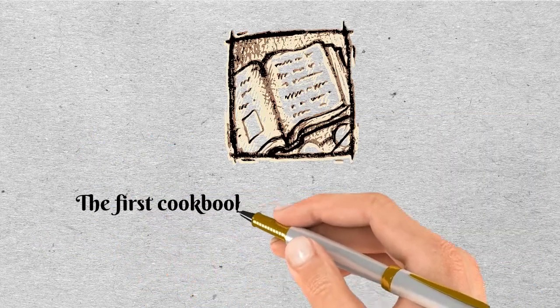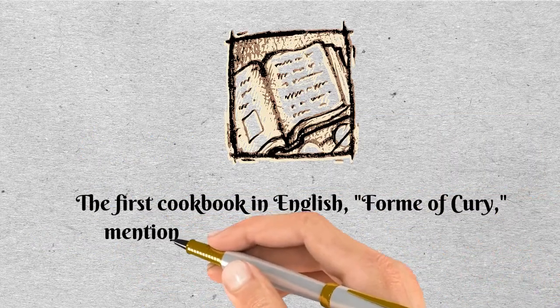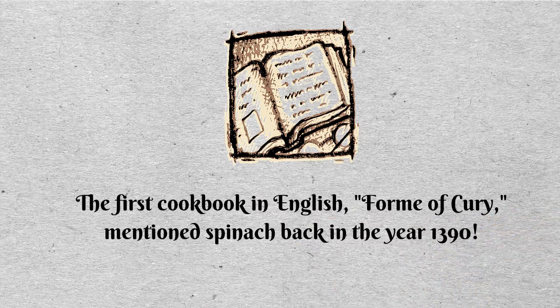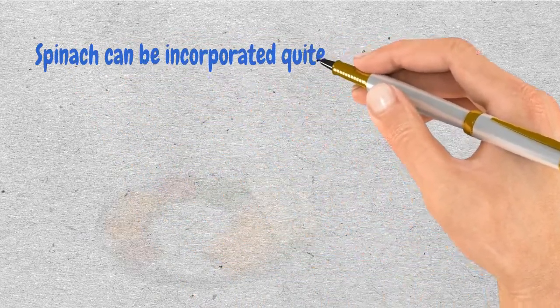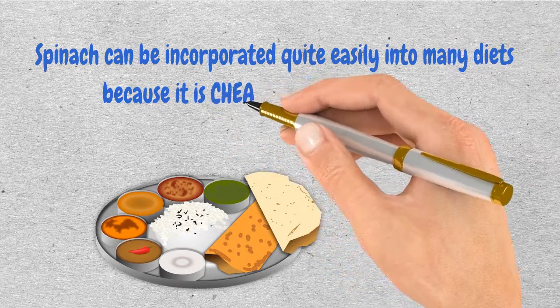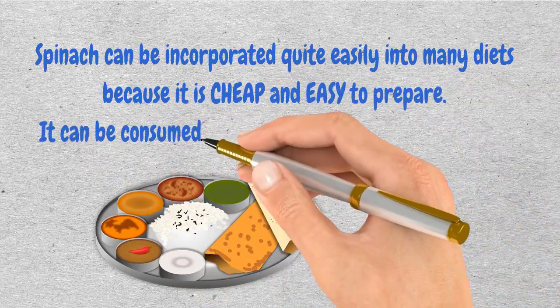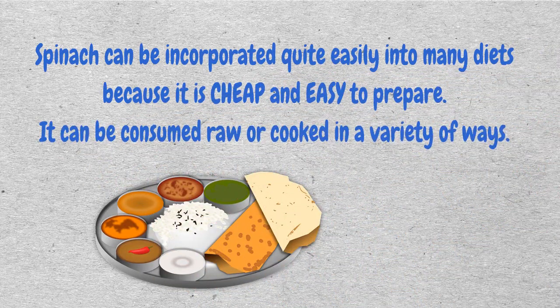The first cookbook in English, Form of Curry, mentioned spinach back in the year 1390. Spinach can be incorporated quite easily into many diets because it is cheap and easy to prepare. It can be consumed raw or cooked in a variety of ways.